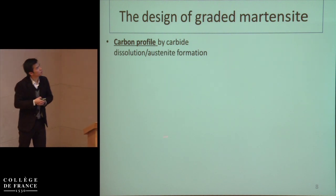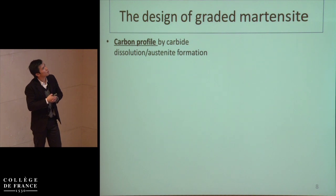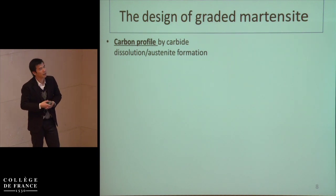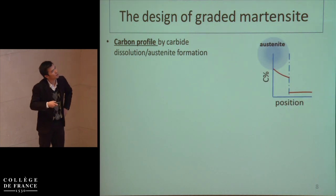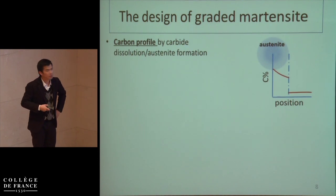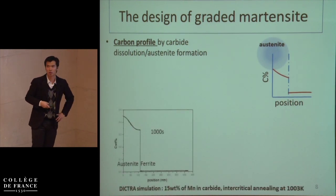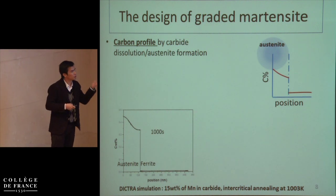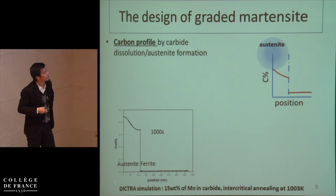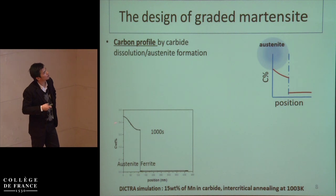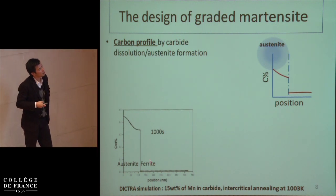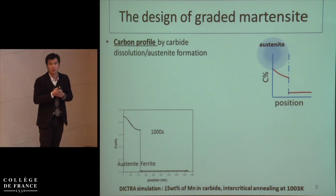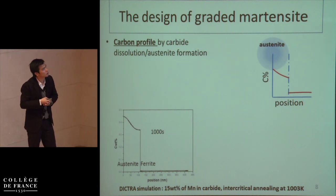Normally, as shown in this graph, there will be a carbon profile within the austenite. Thanks to DICTRA software calculations, we can calculate the carbon profile within austenite during phase transformation. Here we can see that there really exists a carbon profile within austenite, but the problem is that the carbon content in the middle and at the edges of the phases are not very different — the difference is just about 0.1% carbon. The room to play with is quite narrow.